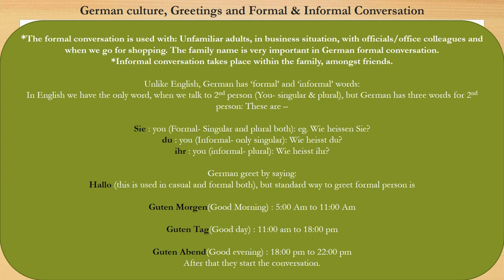Du is used for only singular informal. Now let's take an example of each word. If we are talking to a second person, singular or plural, formal — that can be unfamiliar adults or officials — and we want to know their name, we use Sie. For informal, if we are talking to a second person singular — obviously a family member or friend — and we want to know their name, then we ask: Wie heißt du? — What is your name?